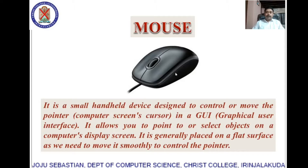First, I am discussing about the mouse. A mouse is a small handheld device designed to control or move the pointer, also called the cursor, on a computer screen. It allows you to point to or select objects on a computer's display screen. It is generally placed on a flat surface — we can use a mouse pad — as we need to move it smoothly to control the pointer.